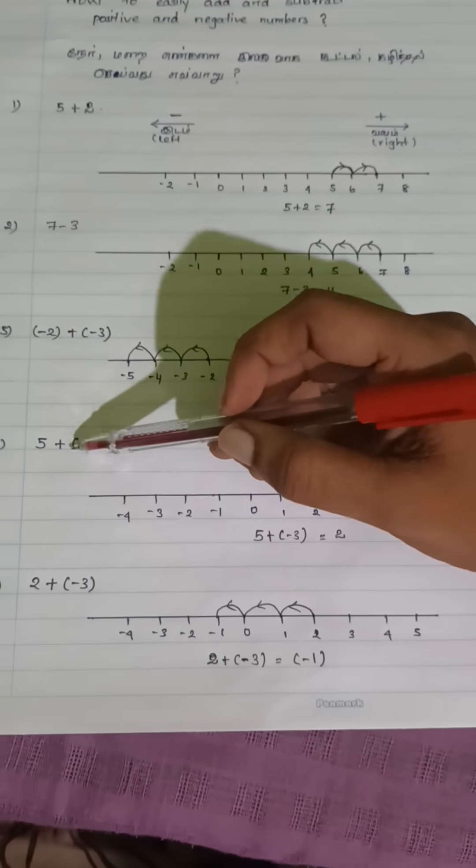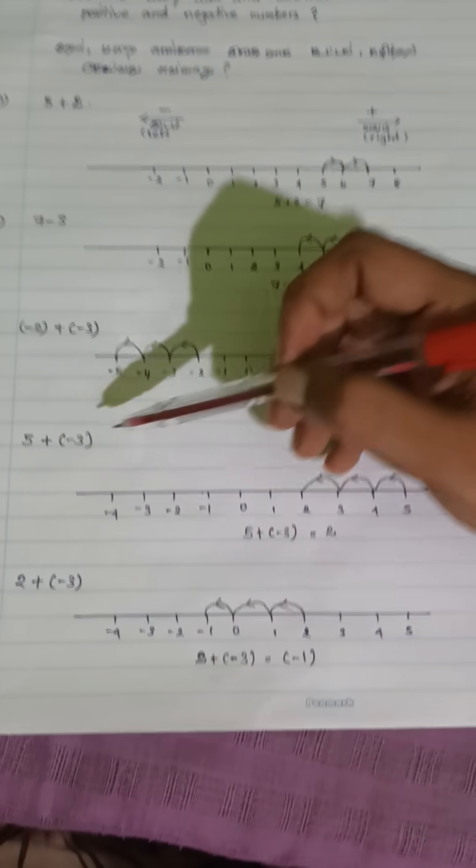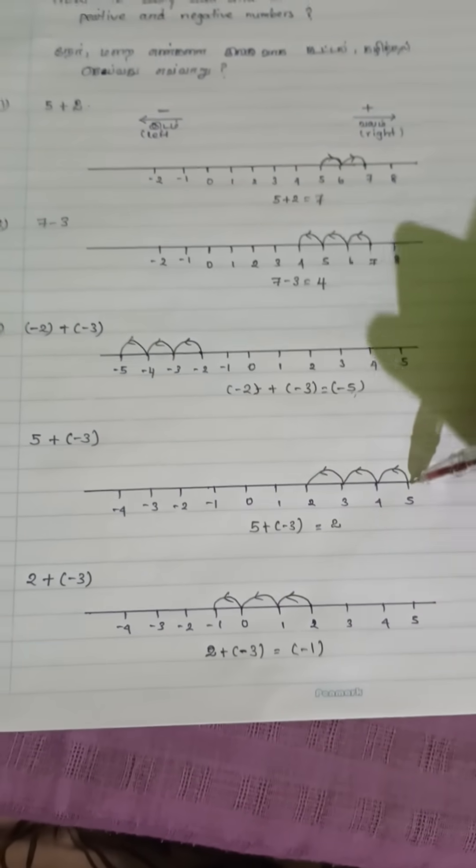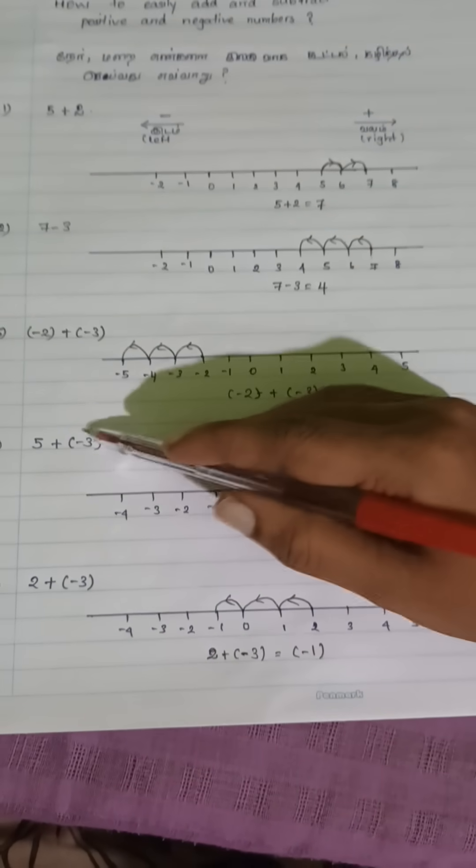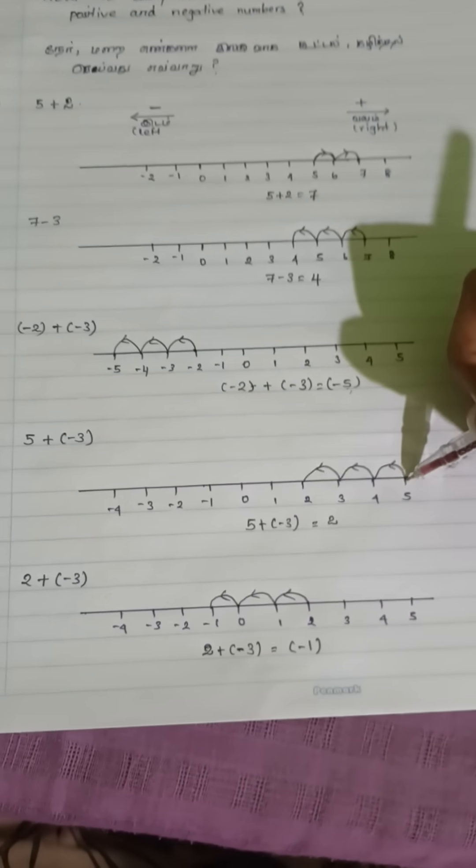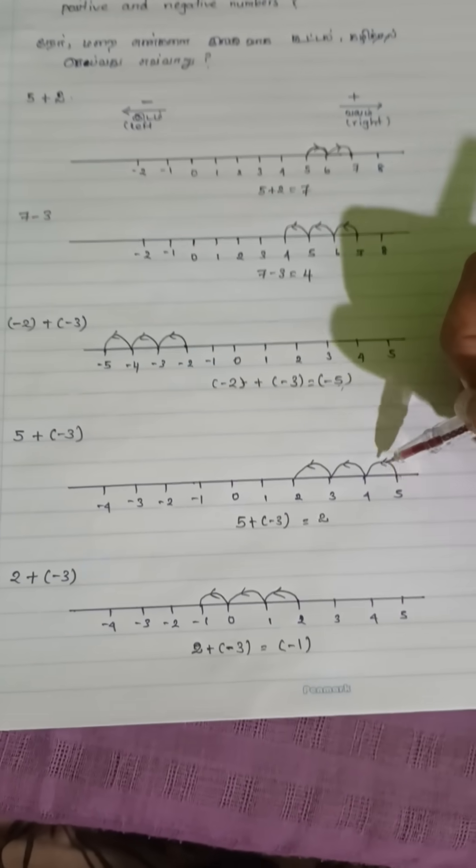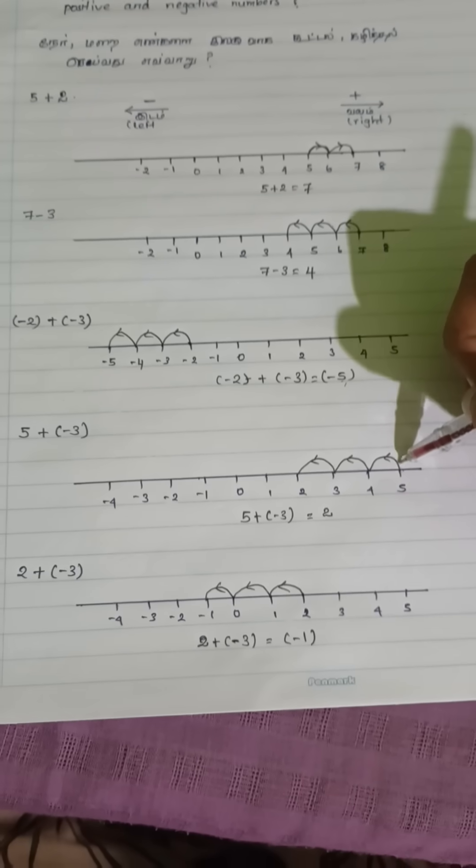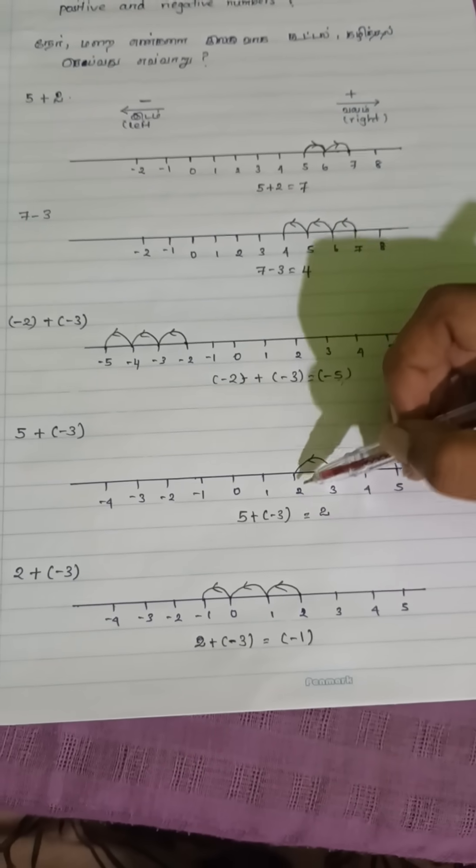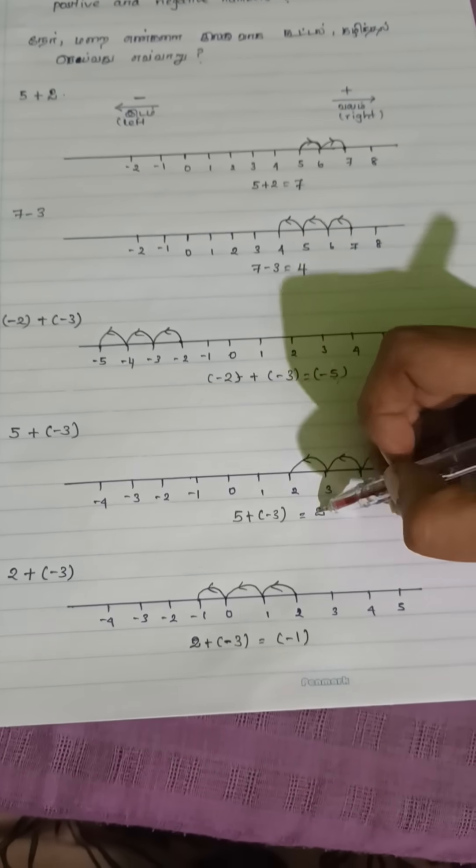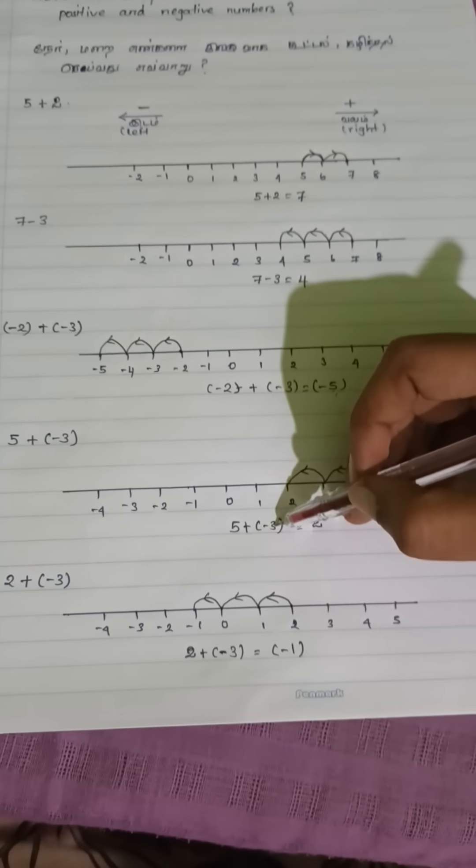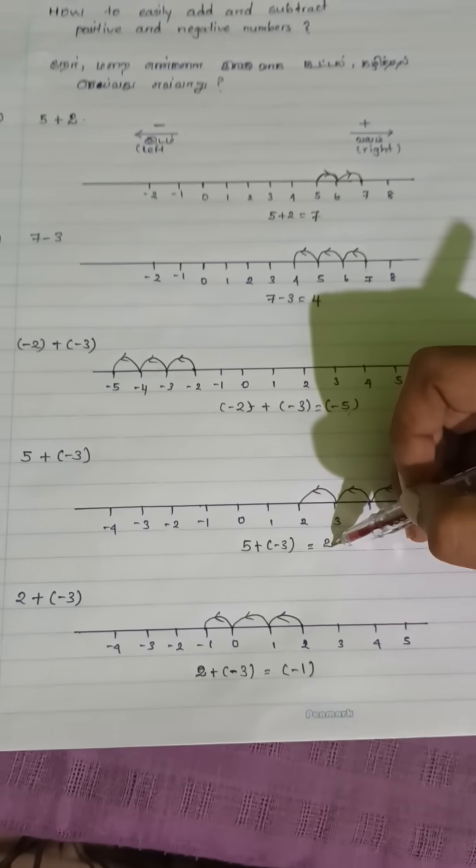Next example, 5 plus minus 3. Start at plus 5. This is a negative number, so you move 3 steps to the left side. 1, 2, 3. You land on 2. 5 plus minus 3 equals 2.